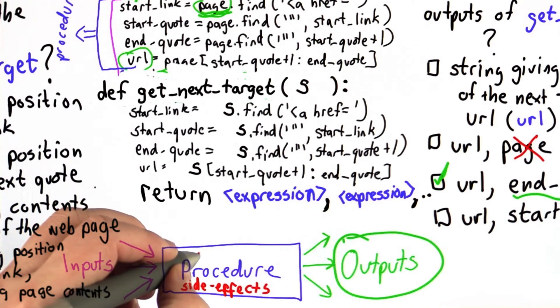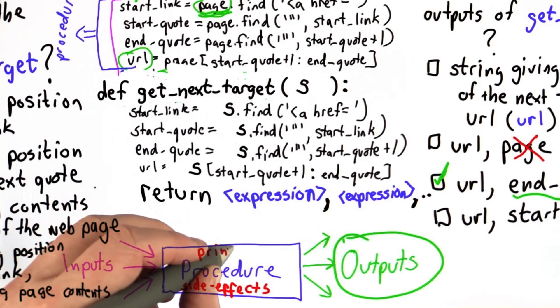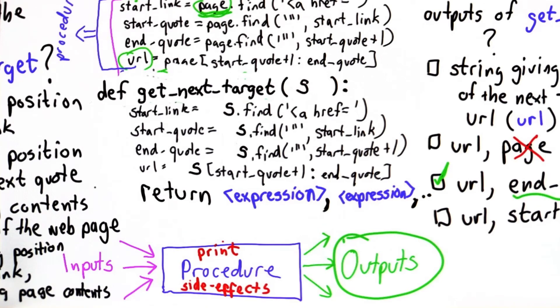And an example of a side effect would be if we printed something out, we would see that result happen. We see everything that happens when the code in the procedure runs, but we wouldn't get it as an output.